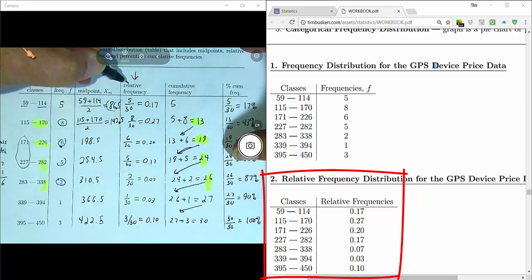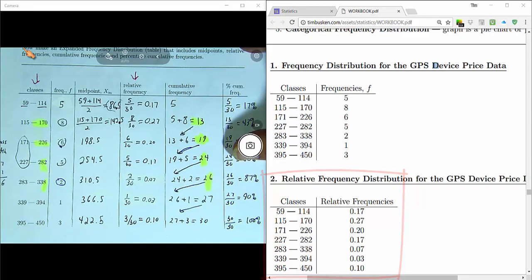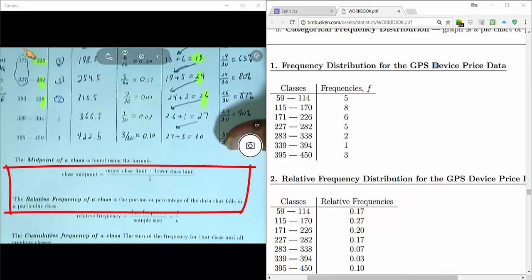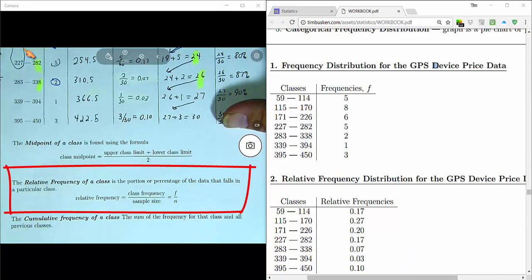That's your relative frequency distribution. Remember that the relative frequency of each class is just the percentage of the data that falls in that particular class.